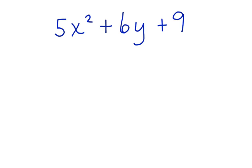Here's an example of a polynomial: 5x squared plus 6y plus 9. Notice that there are variables, and there's a number all by itself here. Each of these is called a term.